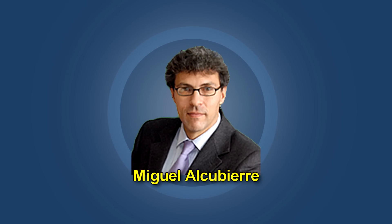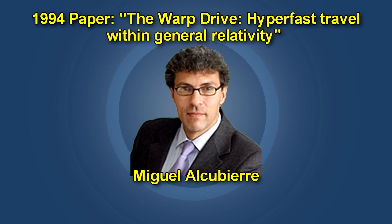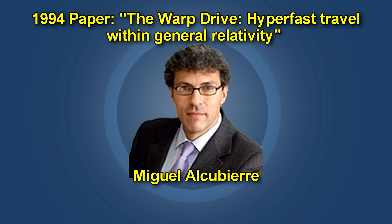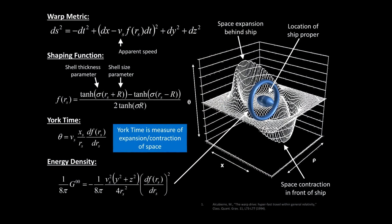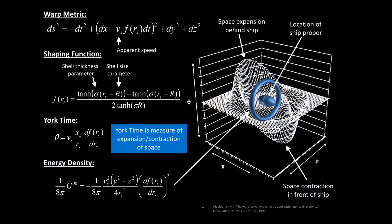In 1994, Mexican physicist and Star Trek fan Miguel Alcubierre published a paper on the warp drive while still a PhD student and became instantly famous. How did he figure this out? He did this by manipulating Einstein's equations of general relativity.